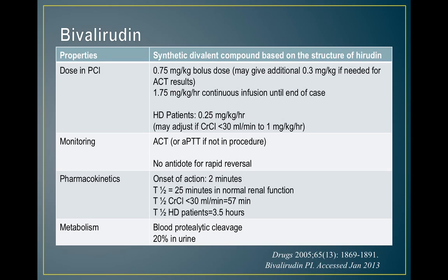There is no antidote for rapid reversal of bivalirudin, unlike heparin which can be reversed with protamine. Bivalirudin has a very quick onset and a very short half-life, so once the drug is stopped there is minimal residual effect. This is important to consider when transitioning to oral antiplatelet agents like clopidogrel or prasugrel, as turning off bivalirudin may leave a period without anticoagulant protection while the oral drug reaches onset. Half-life is prolonged in patients with impaired renal function.